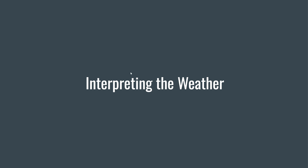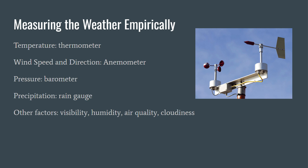Now for our section on interpreting the weather — measuring the weather empirically. Here is the list of instruments that we use. For temperature we use a thermometer, and for wind speed and direction we use the anemometer.